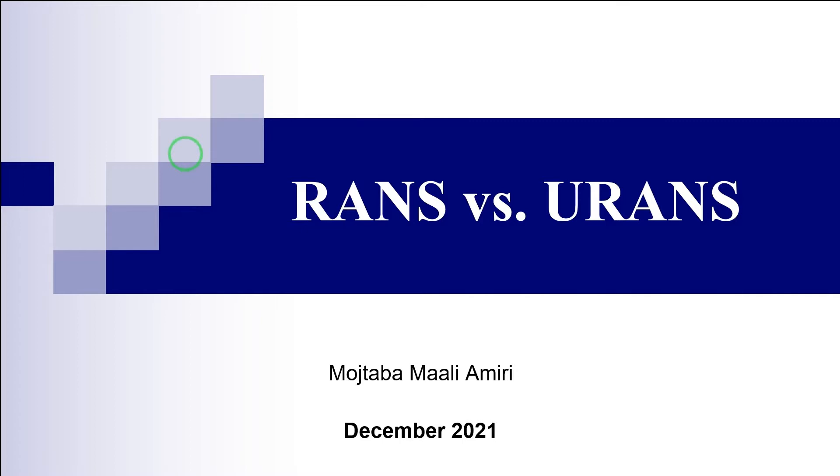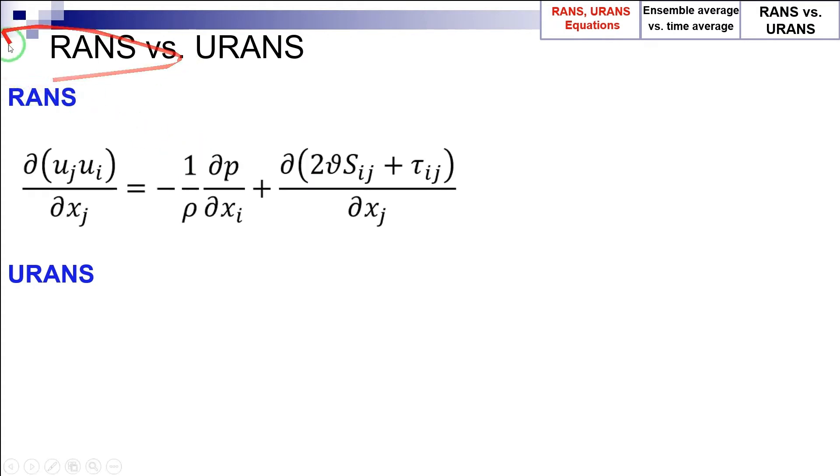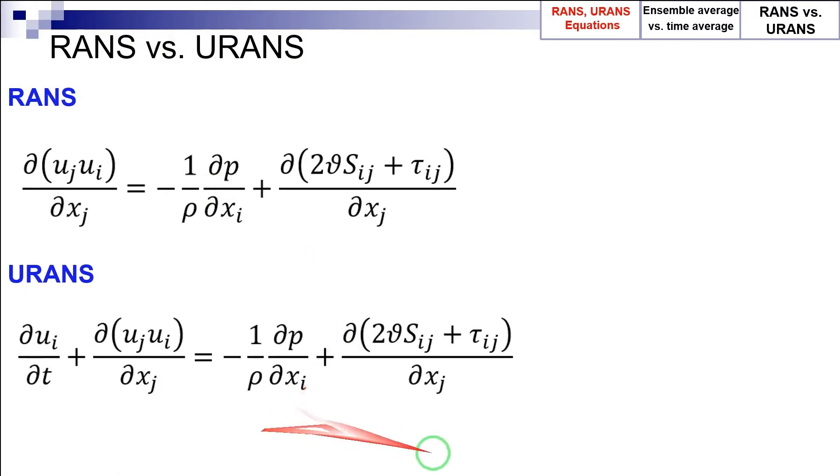RANS stands for the Reynolds-averaged Navier-Stokes equations, which we can see here, while URANS stands for unsteady RANS equations, as is shown here. The difference between RANS and URANS is basically the presence of the temporal derivative of velocity components in the URANS equations, which is absent in the RANS equations.